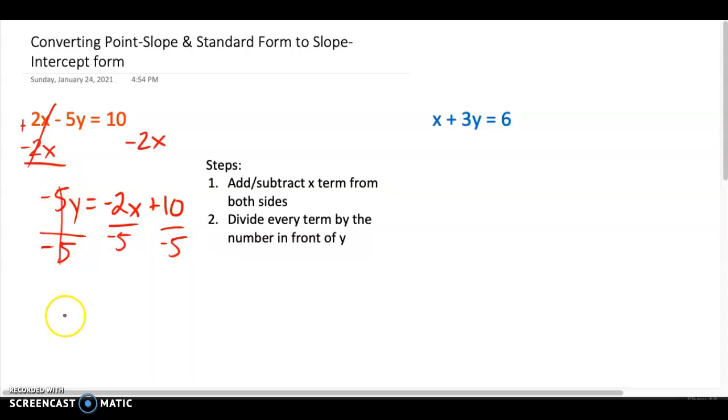So this cancels out, which is what I want, and I got y is equal to a negative divided by a negative. It's going to be a positive, and then I can just leave that as a fraction, because fractions are cool when it comes to slope. And then 10 divided by negative 5 is the same as 10 divided by a regular 5. It's just going to be negative. So that's 2. And bada bing, bada boom, there is my slope-intercept form.